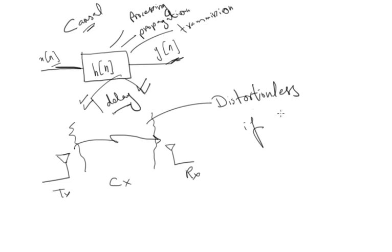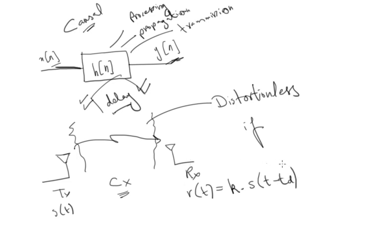In the time domain, if the received signal is r of t and the transmitted signal is s of t, then the received signal will get a constant gain — in other words, it is passed through an all-pass filter. You can model this channel as a filter, and your input is delayed by some amount td, which is the transmission or propagation delay.